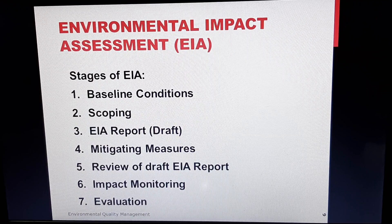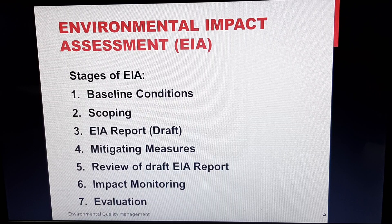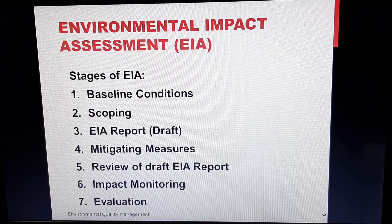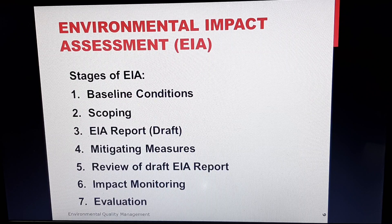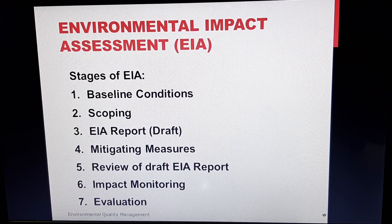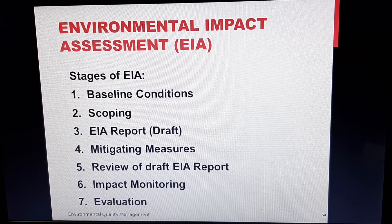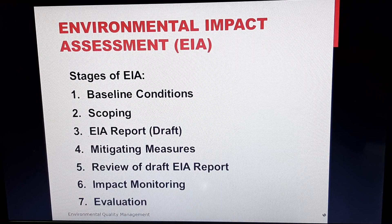The second stage would be scoping. Scoping is the process of early identification of environmental issues which are relevant, concerns, assessment methods, affected interests and so on. The third would be the EIA report, which is a draft — a concise report limited to addressing the main environmental issues. The next would be mitigation measures, which are actions that reduce, avoid or offset the potential adverse environmental consequences of development activities.